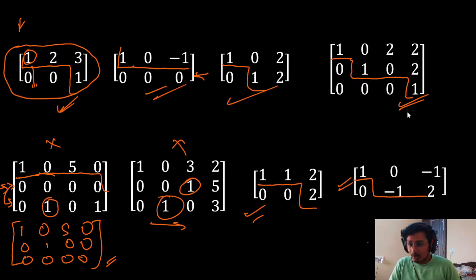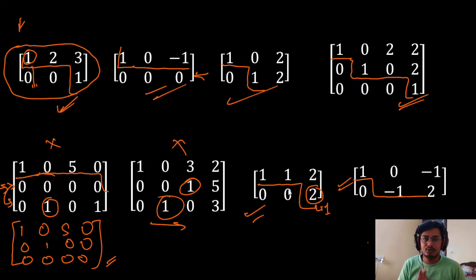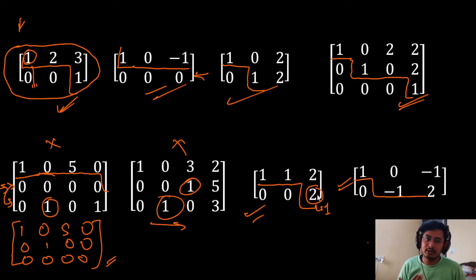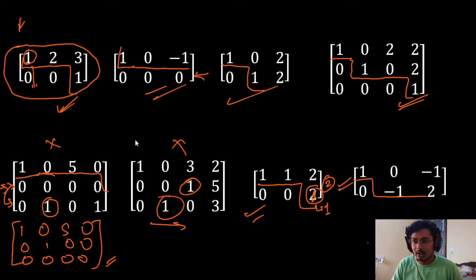One more thing to clarify: some books say the leading entry should be one, but it is not necessary. The leading entry can be any number — that is absolutely fine. We can apply row transformation and divide by any scalar to get one, but having any other number is also valid.